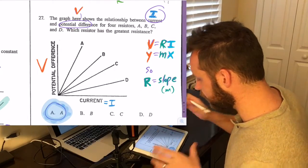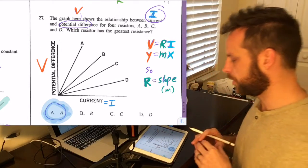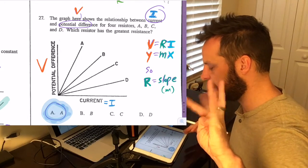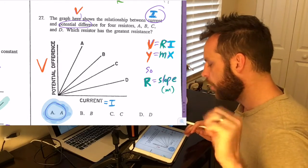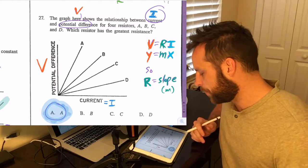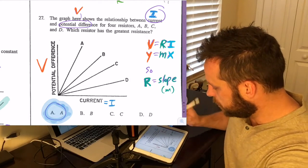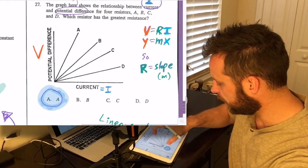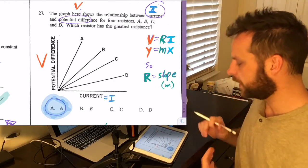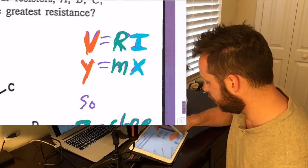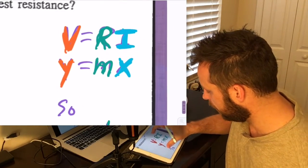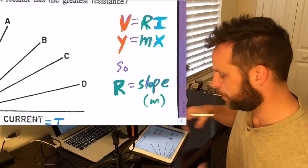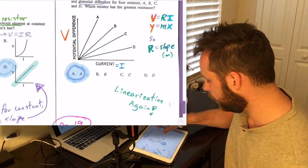Number 27 says the graph here shows the relationship between current and potential difference for four resistors A, B, C, and D. Which resistor has the greatest resistance? So we have potential difference voltage graphed on the Y and current is graphed on the X, and then we see all of these lines. So we're linearizing again. I've written over here V equals R times I and Y equals M times X. And so R is going to be the slope as we've just discussed. And so if you know about your slopes, you can quickly pick this answer.